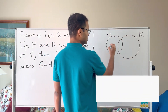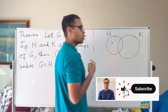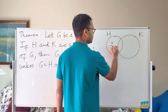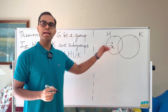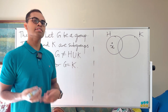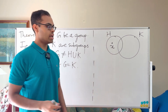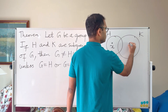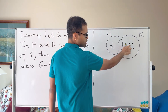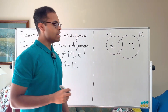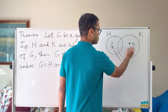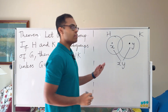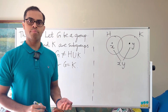Since G is not equal to K, there is some element x that is not in K but must be in H, because G equals H union K. Similarly, we choose a y in K that is not in H. Then we're going to show that the product xy is outside of both H and K. That's the approach.